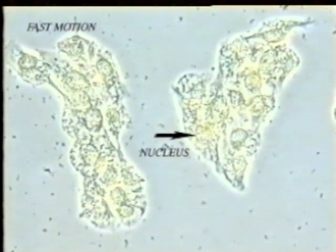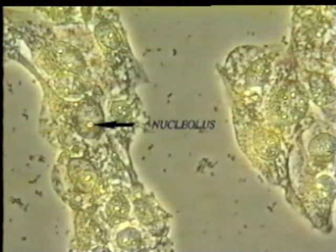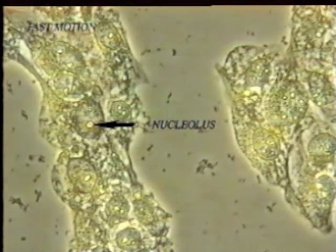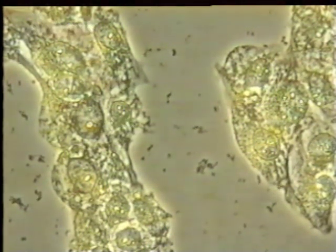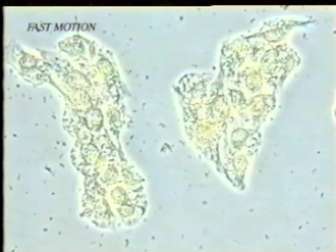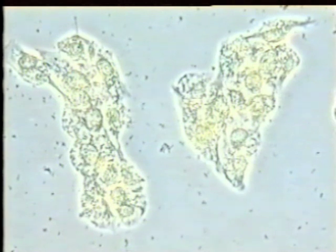After 30 minutes' contact with the anti-cancer agent, nuclei of some cells are already yellowish in places and nucleoli are stained pale gold, showing where PB100 concentrates. Cytoplasm is very slightly stained, but its organelles remain colorless.